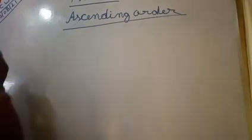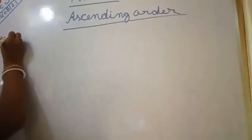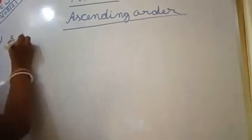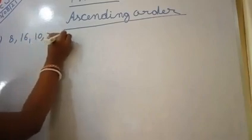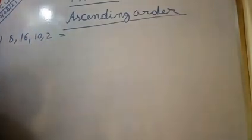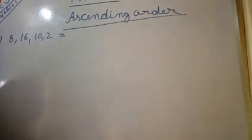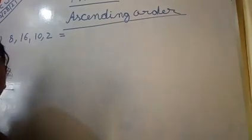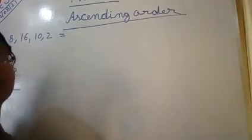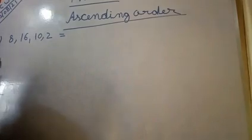All the numbers are given not in proper order. You have to arrange them properly — smaller number to bigger number. That is called ascending order. So let's start. Suppose the numbers given are 8, 16, 10, 2. We have to find out which number is small. We are writing the numbers here, but if the numbers go beyond 50, it is not possible to write them all. So better, remember the concept of forward counting.